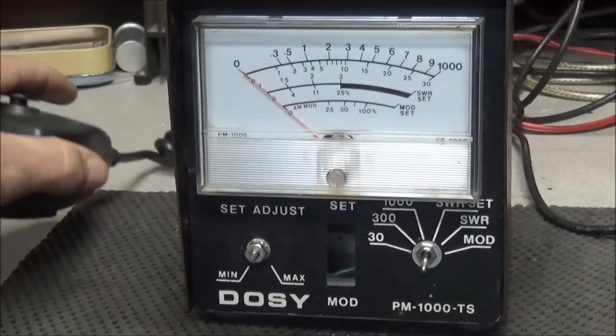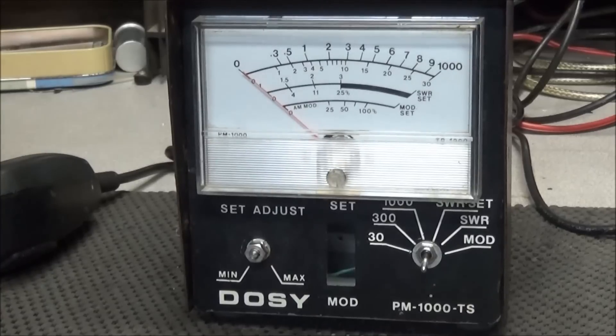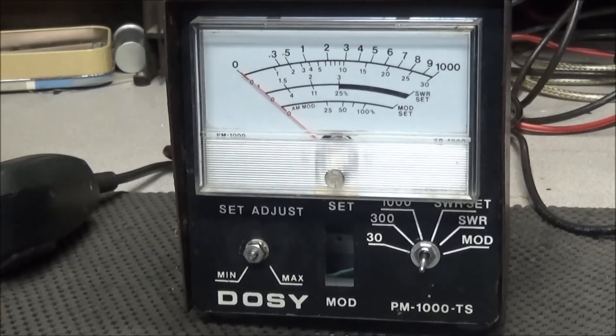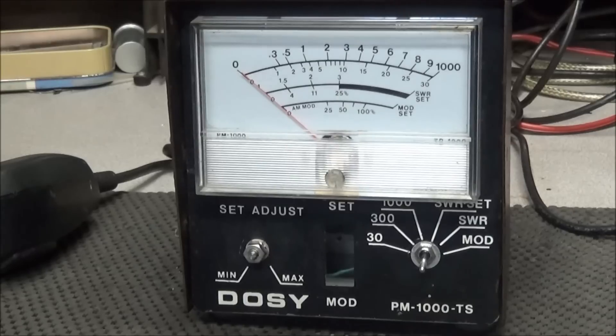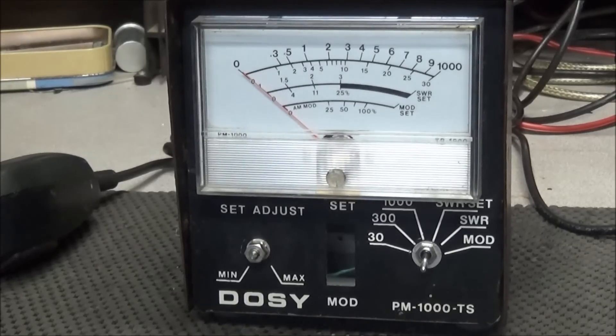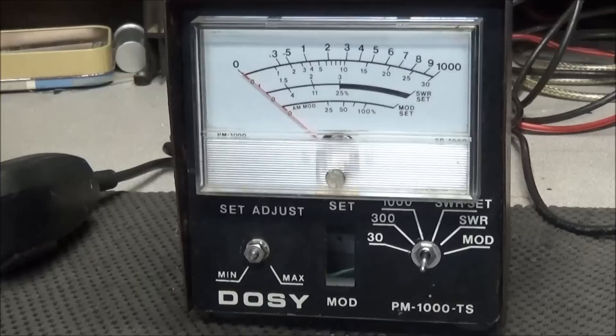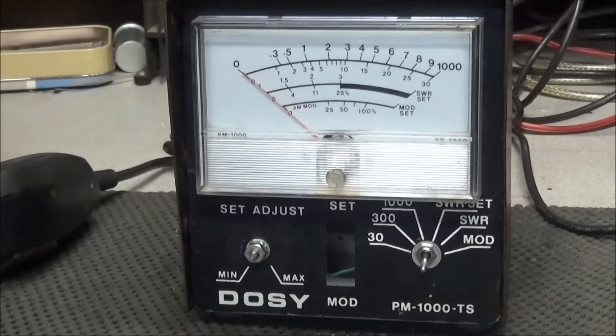And this is simple but it's effective for reading low wattage. If you're running QRP and putting out anywhere from one watt to five watts, this would be ideal to use for that.